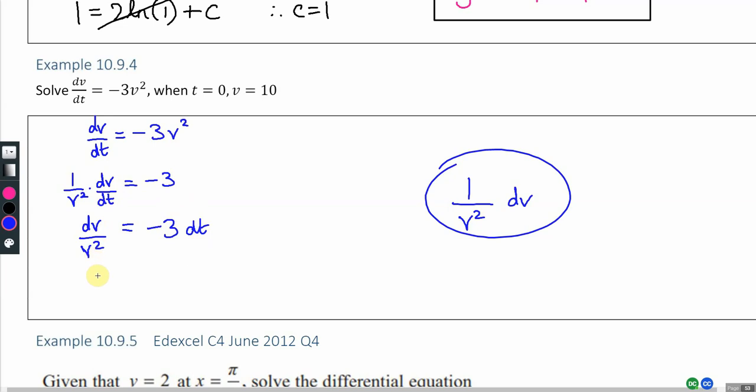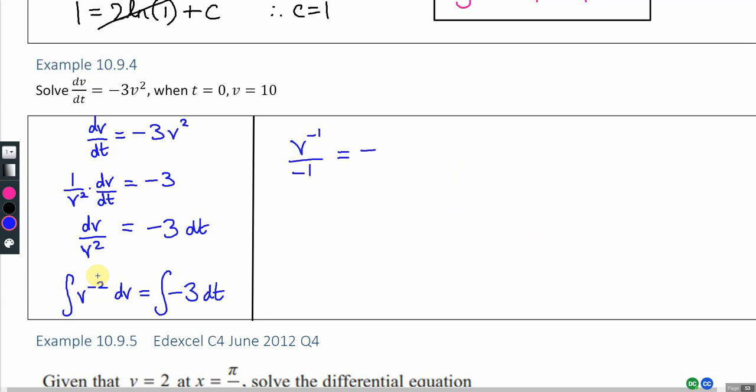So now ready to integrate both sides. On the left hand side I'm integrating v to the power minus 2 dv. On the right hand side integrating minus 3 dt. The left hand side will become v to the power minus 1 divided by minus 1. The right hand side minus 3t plus a constant. We have information which will allow us to find the particular solution here. At the moment we have the general solution.